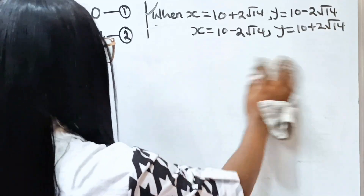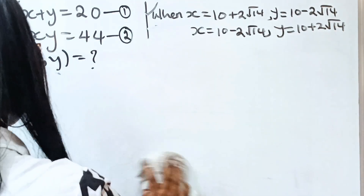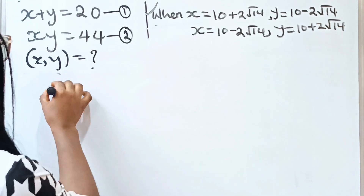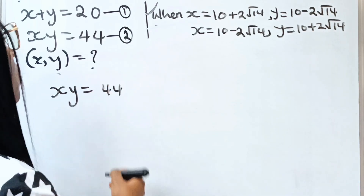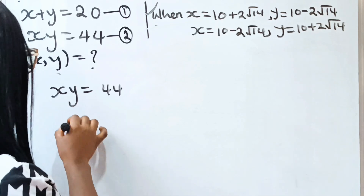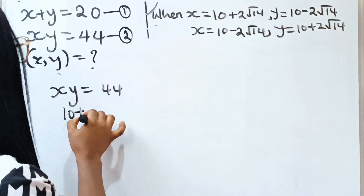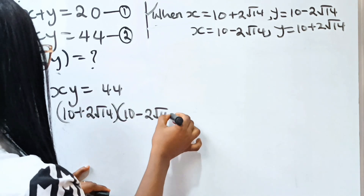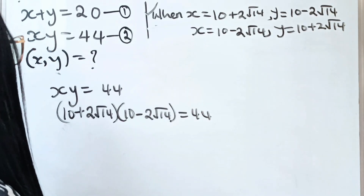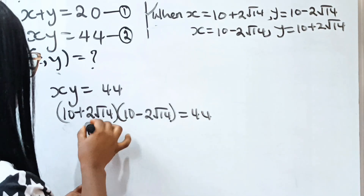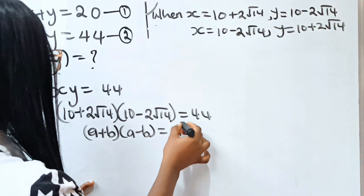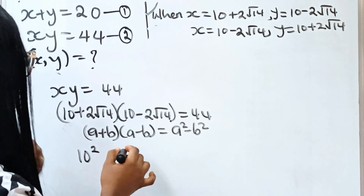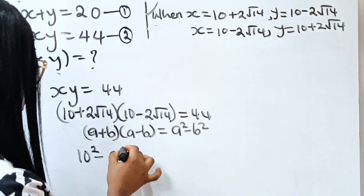Now let us check the second equation, which says x multiplied by y equals 44. When x is 10 plus 2 root 14, multiplied by 10 minus 2 root 14. Remember that (a plus b)(a minus b) equals a squared minus b squared. So we can write this as 10 squared minus (2 root 14) squared.